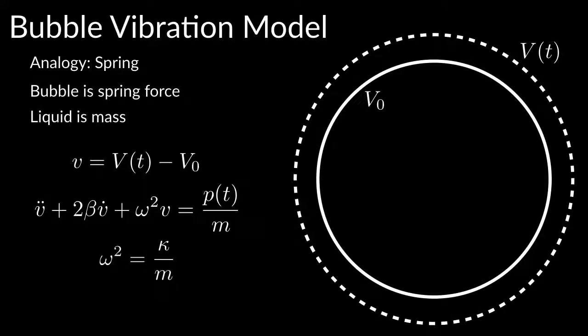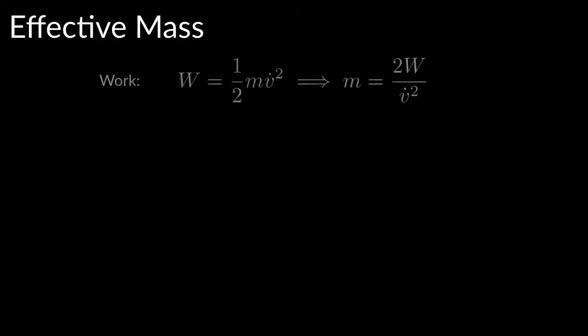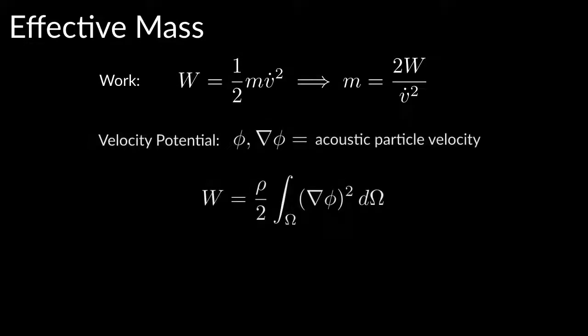We show how to compute the mass term more accurately than in previous work. The mass term can be calculated by computing the work that each bubble does to the fluid. We calculate this by computing a velocity potential function.